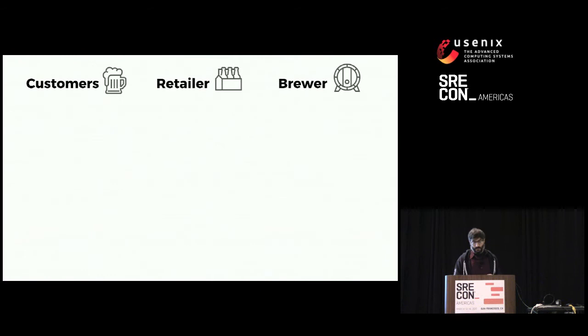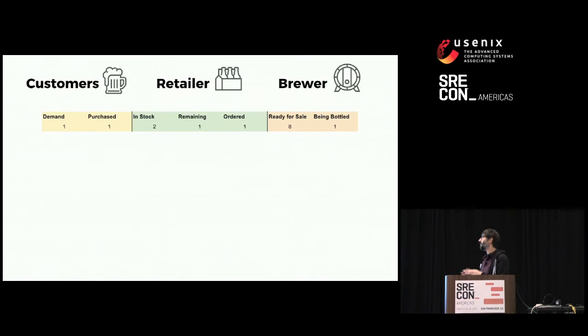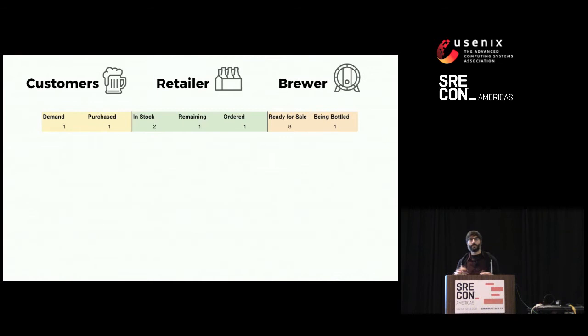Starting off — you don't have to follow the numbers, I'll just read through them. In week zero, the steady state: customer demand for this particular brand of beer — let's call it startup beer — is one case. The retailer keeps two cases in stock; after the sale they have one remaining, so they order one every week. The brewer has eight ready for sale and is bottling one a week. We've got a system in equilibrium, steady state.